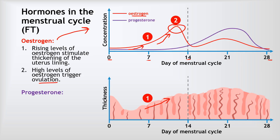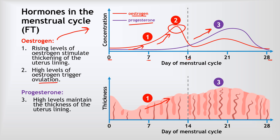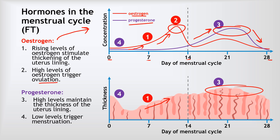The second hormone is progesterone, represented by the purple line. It stays pretty low throughout the first half of the cycle and only increases after ovulation. When progesterone concentrations are high, that maintains the thickness of the uterus lining and enables it to nourish an embryo should one implant. However, over time, progesterone levels start to drop, and that triggers menstruation — the uterus lining breaks down and leaves the body through the vagina, triggered by those low levels of progesterone.